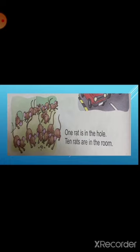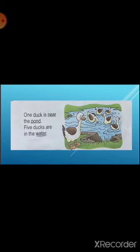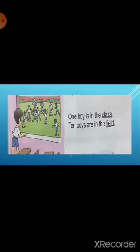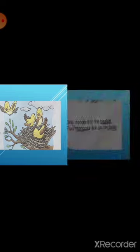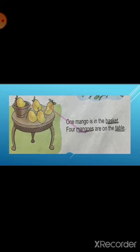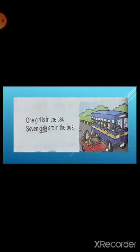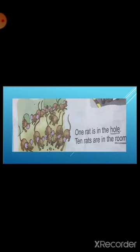Now let's underline the difficult words. Come to the first paragraph and underline the words: duck, near, pond, water. Underline the words: class, field. Come to the next paragraph and underline the words: bird, nest. Come to the next paragraph and underline the words: basket, mangoes, table. Come to the next paragraph and underline the word: girls. Come to the last paragraph and underline the words: hole, room.